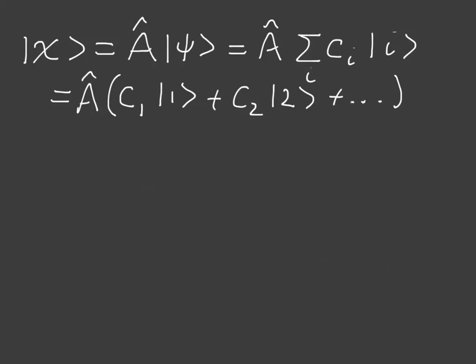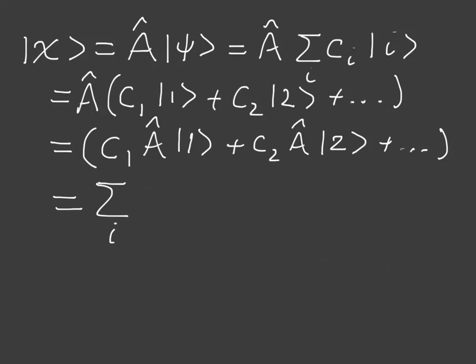And those are round brackets. And then we can take A inside the bracket in the same way that we would with numbers. That relies on a rather fundamental part of quantum mechanics we won't be covering. And that's equal to C1 A hat acting on 1 plus C2 A hat acting on 2 plus dot dot dot, close round brackets, which is actually equal to the sum over I of CI A hat on ket I, the vector I.